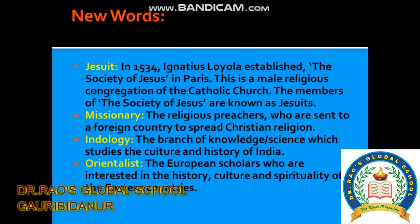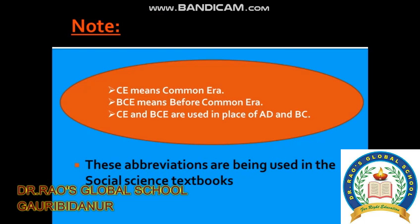One more thing to note: CE means Common Era and BCE means Before Common Era. C and BC are used in place of AD and BC — that is, before and after the death of Christ. These abbreviations are now used in the social science textbook.